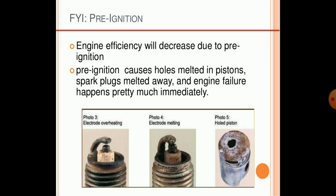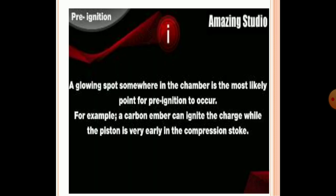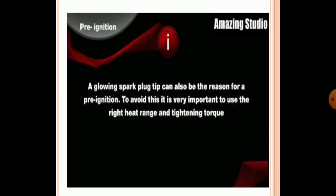Engine efficiency will decrease due to pre-ignition. Pre-ignition causes holes in the melted piston — pistons get melted due to overheating — and the spark plug melts away, causing immediate engine failure. A glowing spot somewhere in the chamber is the most likely point for pre-ignition to occur. For example, carbon embers can ignite the chamber while the piston is very early in the compression stroke. A glowing spark plug tip can also be the reason for pre-ignition. To avoid this, it is very important to use the right heat range and correct tightening torque.